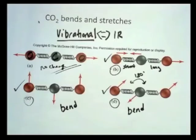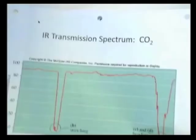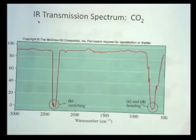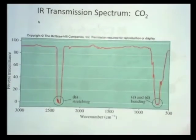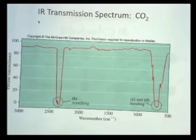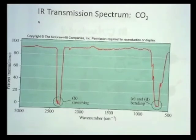Now, here's an example of what's called an IR transmission spectrum for carbon dioxide. This is a spectrum which comes from a piece of equipment called an infrared spectrometer.